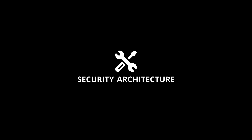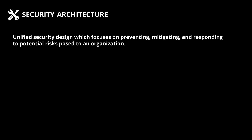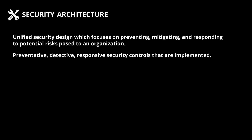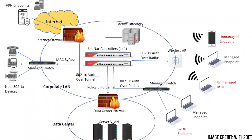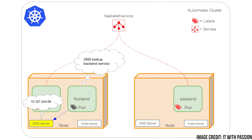Let's get started with security architecture. Security architecture is a unified security design which focuses on preventing, mitigating, and responding to potential risks posed to an organization. It consists of preventative, detective, and responsive security controls that are implemented in infrastructure, applications, users, and more. Security architecture ultimately considers building a secure system by design and from the ground up, and then actively maintaining that system. A system — a broad word — can mean an application, a corporate network, a Kubernetes cluster running in a production network, or many other types of systems.